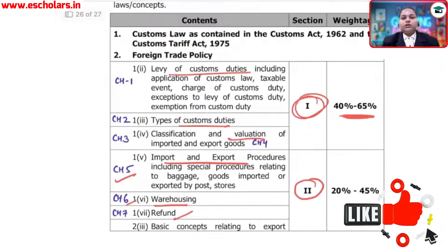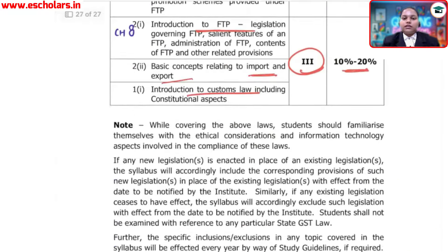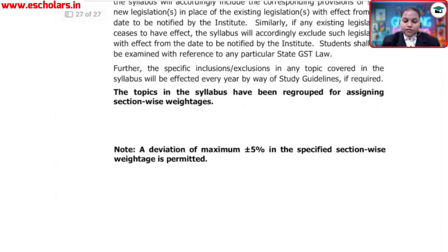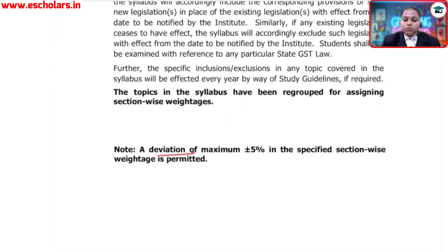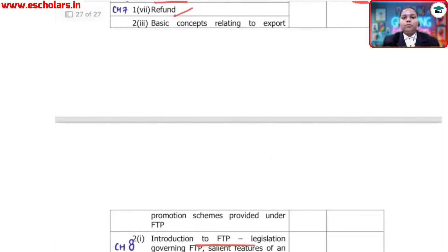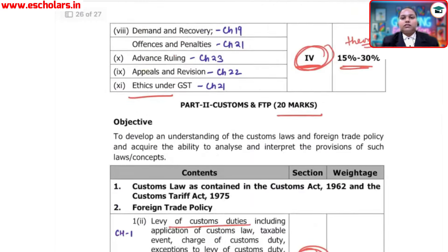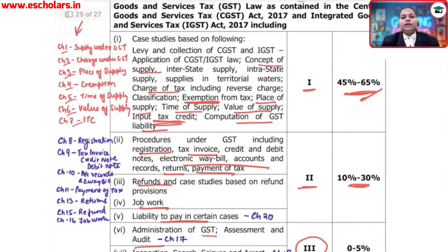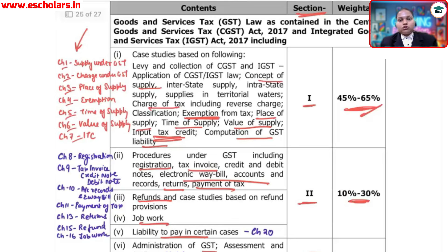This is the institute's weightage. There is a maximum deviation of plus or minus 5% from the specified section weightages, so there is a little flexibility, but the basic structure of the paper will follow this pattern. Keep the institute weightage and ABC analysis in mind and plan your study accordingly for the November 2024 exam.